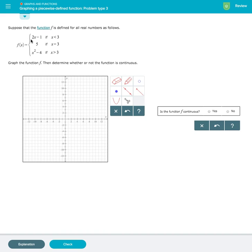To start, we will look at our first part of the function, 2x minus 1, if x is less than 3. Because x is less than 3, at the point x equals 3, we will exclude that point by using an open circle.